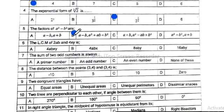Question 6: the LCM of 2ab and 4xy is equal to 4ab·xy. Option A is correct. Question 7: the sum of two odd numbers is always an even number. Option C is correct.